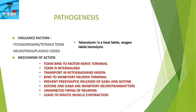Regarding the mechanism of action: the toxin binds to the motor nerve terminals, is internalized, and then transported in a retrograde fashion. It then binds to the inhibitory neuron terminals, preventing the presynaptic release of GABA and glycine, which are inhibitory neurotransmitters. This uninhibited firing of neurons leads to spastic muscle contraction.